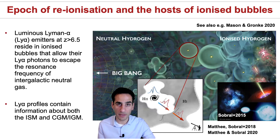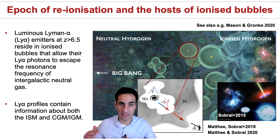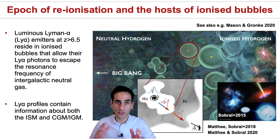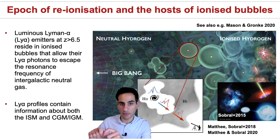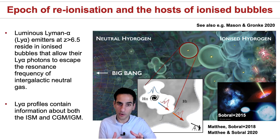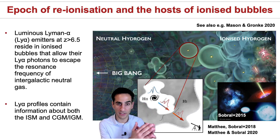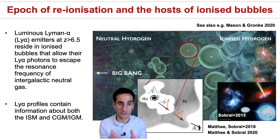Lyman-alpha emitters are really spectacular, especially within the epoch of reionization, because if you find one that is especially luminous and at high equivalent width, it's almost certain that it resides in one of these early ionized bubbles. If we see Lyman-alpha, it means it escaped from resonance, and the bubble is large enough for the Lyman-alpha photons to redshift out of resonance. By measuring those profiles, we can learn a lot about the IGM, CGM, and even the interstellar medium.